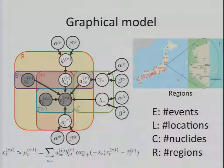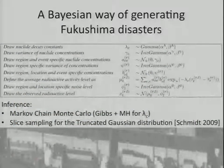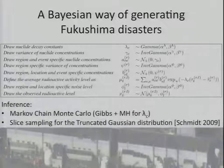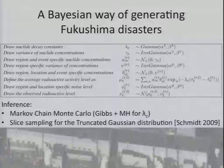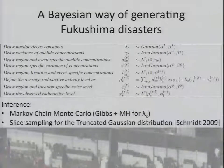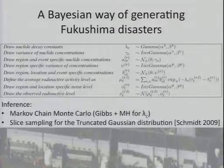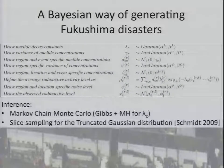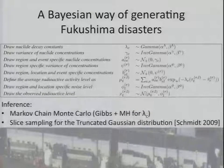To summarize, we have a Bayesian recipe for generating the Fukushima disaster data. We first draw a nuclide decay constant and draw the prior variances of the A and B coefficients from an inverse gamma distribution. Because A and B coefficients are non-negative, they are sampled from a truncated positive-part Gaussian distribution. For inference we do Markov chain Monte Carlo, using a basic algorithm but also Metropolis-Hastings for the decay constant, and for sampling over these positive-part Gaussian distributions we use a slice sampling technique proposed in a referenced paper.